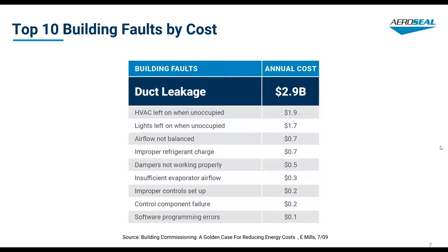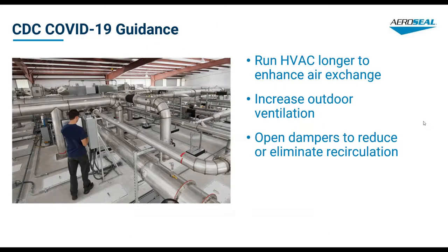Looking at the top 10 building faults by cost — perhaps better titled 'Top 10 Energy Wasters' — duct leakage costs 2.9 billion dollars annually. This is surprising even compared to HVAC and lighting running unoccupied, which were always considered low-cost, high-payback ECMs. If you can shut it off, it doesn't get more efficient than off — but duct leakage really flies under the radar, and as you can see, it's a pretty significant problem.